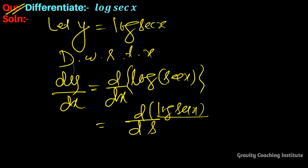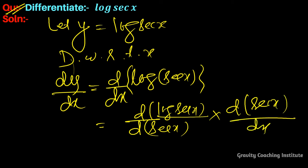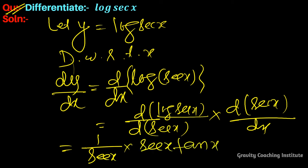We know that the differentiation of log x equals 1/x, so this gives 1/sec x. The differentiation of sec x equals sec x tan x. Therefore, sec x in the numerator and denominator cancel, giving the final answer: tan x.